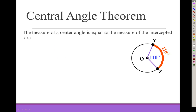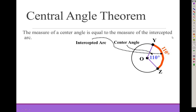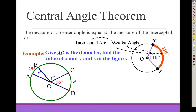The central angle theorem says that the measure of a central angle of a circle is equal to the measure of the intercepted arc. So here we have an arc whose measure is 110 degrees, and the angle that intercepts that arc is also 110 degrees. Notice the ends of the angle are at the same place as the endpoints of the arc — same measure.